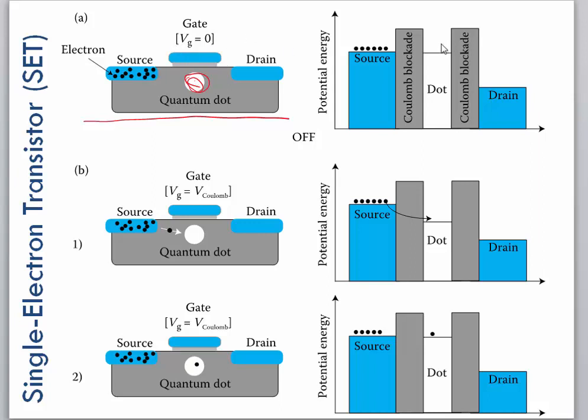So without any gate voltage, the Coulomb blockade keeps all these source electrons from going anywhere, so they're just hanging out there.